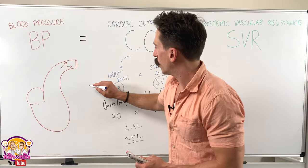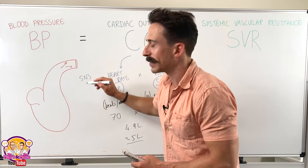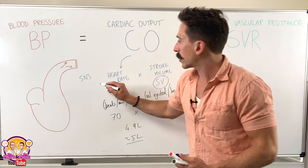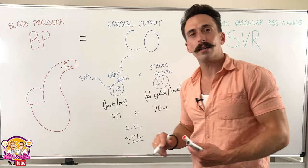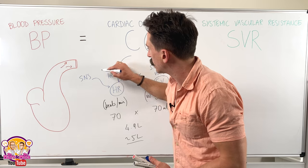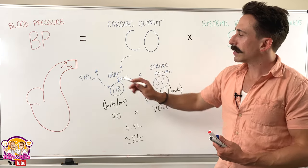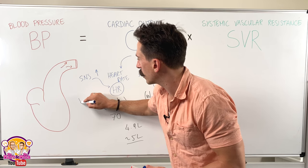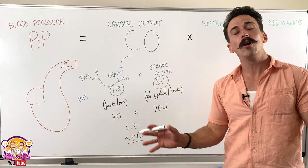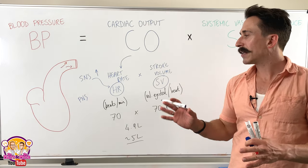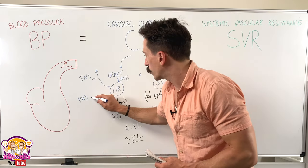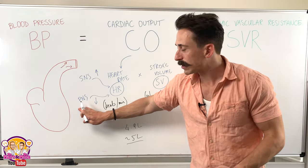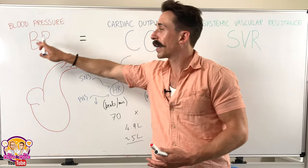So how can we affect heart rate and stroke volume? The first thing is the autonomic nervous system — specifically our sympathetic nervous system, the fight-or-flight response. This gets triggered when we are scared; the release of adrenaline and noradrenaline stimulates the heart, the SA node, the AV node, and increases heart rate. So the sympathetic nervous system increases heart rate, increases cardiac output, increasing blood pressure. The parasympathetic nervous system is our rest and digest — activated when we are resting or eating, mediated by the vagus nerve, the 10th cranial nerve. It travels to the heart and tells heart rate to slow down, dropping cardiac output and dropping blood pressure.